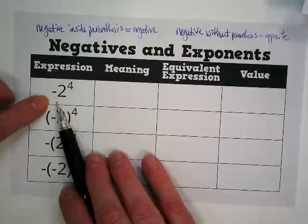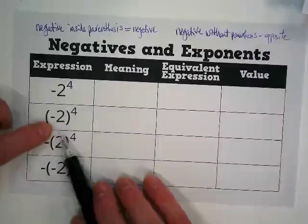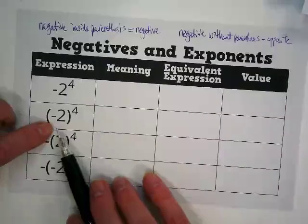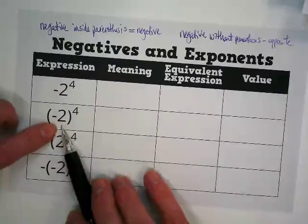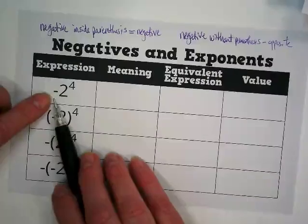In front of it, there's an invisible negative 1. When it's inside the parentheses, that negative is trapped with the number that it's in front of. And so this one is a negative 2 versus this one is a negative 1 times 2.